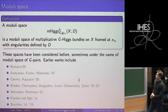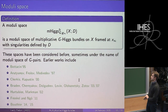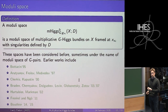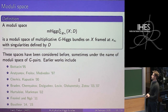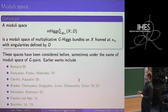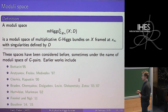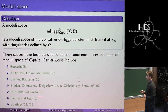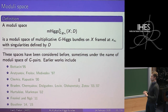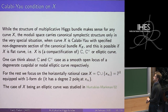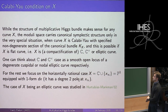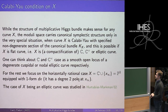This moduli space of multiplicative G-Higgs bundles, and particular versions of it, has been considered before — sometimes under the name of 'moduli of G-pairs'. Earlier works include Bottacin, Arthamonov, Afrolov, Medvedev, Cherkis, Kapustin, Braden, Chernyakov, Dolgushev, Levin, Olshanetsky, Zotov, Hurtubise, Markman in a very extensive paper on the elliptic case, and Frenkel, Ben-Zvi, Nadler, and Bouttier working on similar definitions for the Langlands program.